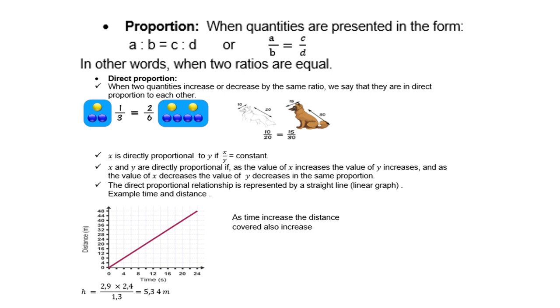The direct proportional relationship is represented by a straight line, or we can also call it a linear graph. Look at the example. If you compare distance to time, if it's a straight line, it is definitely a direct proportion.